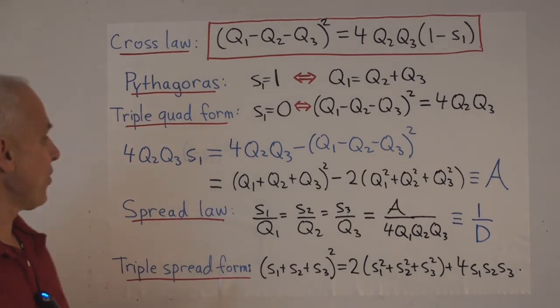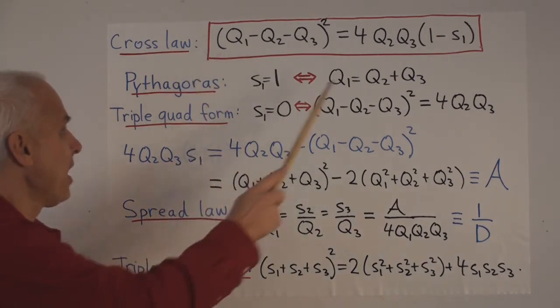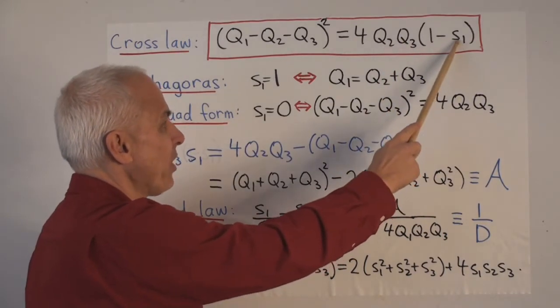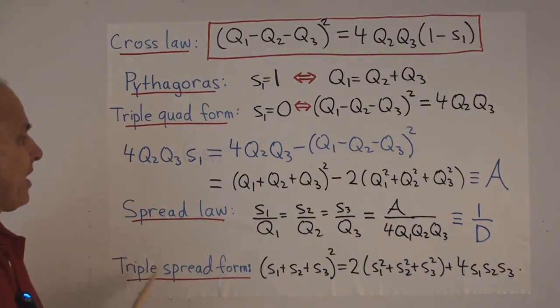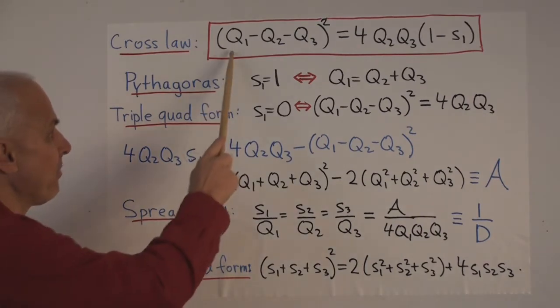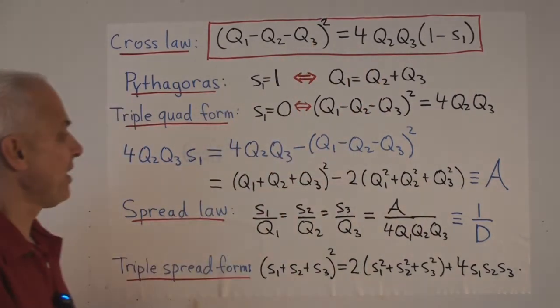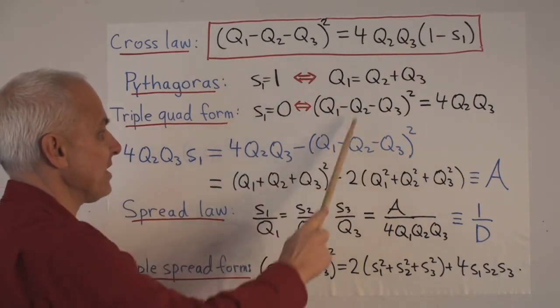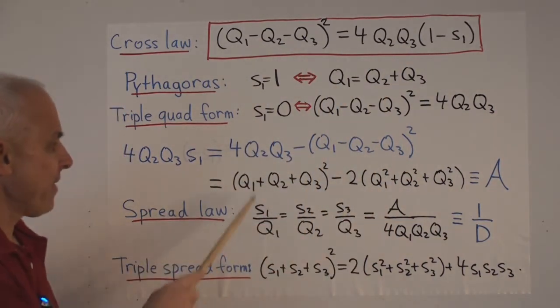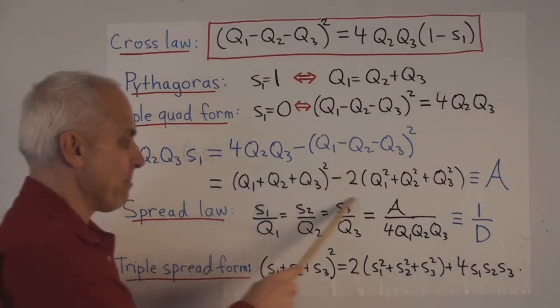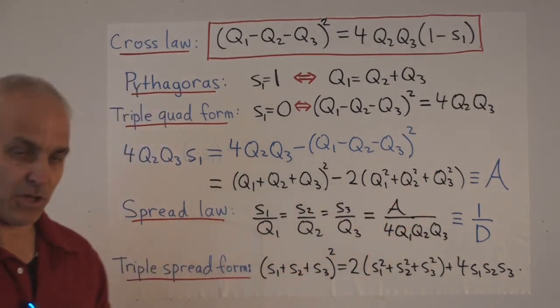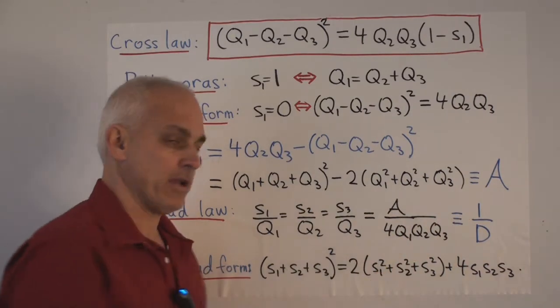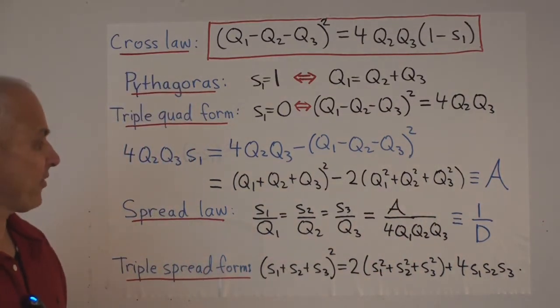Now we can rewrite the cross law by bringing the 4Q2Q3S1 to the left-hand side. If we bring that to the left-hand side and bring this quantity to the right-hand side, we get 4Q2Q3 left over from here minus this thing. That can be expanded to give this symmetrical expression involving the Q's. And that symmetrical expression is an important quantity which we've called the quadrea of the three points.